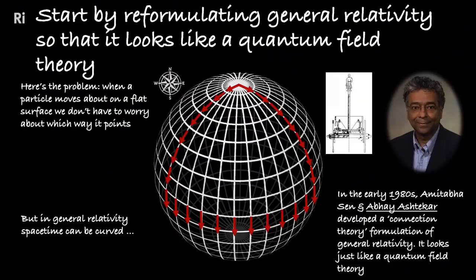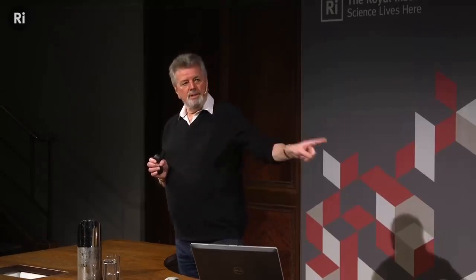Any theory based on general relativity which allows for spacetime curvature has to accept what's known as the parallel transport of a vector. Fortunately, in the early 1980s, two Indian theorists — Amitabha Sen and Abhay Ashtekar — came up with a connection theory which allowed general relativity to be reformulated. When it was reformulated, it looked exactly like a quantum field theory. Einstein and Austrian physicist Erwin Schrödinger were there before, but struggled with the mathematics of these connection-type theories. So your next question is: a quantum field theory of what, exactly?